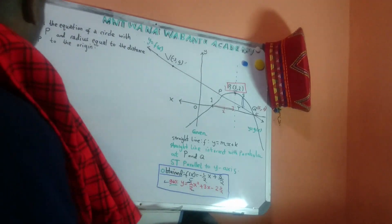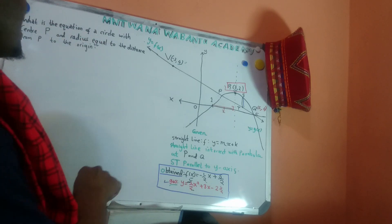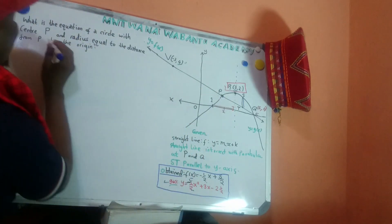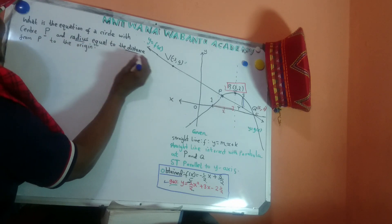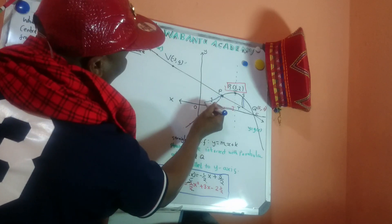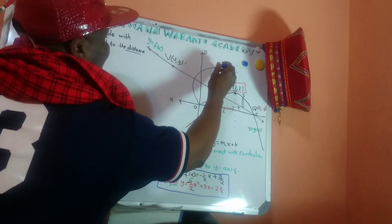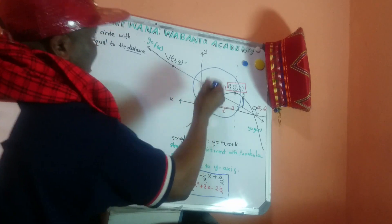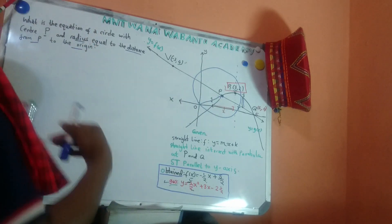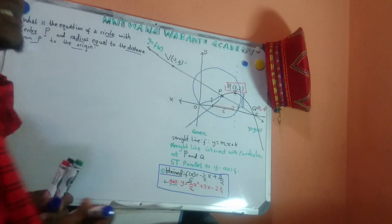Let's go to the next question. What is the equation of a circle with center P? So this circle is going to have a center at P. Let's assume our circle has center P and the radius equal to the distance from P to the origin. So the radius goes from P to the origin. I can draw a rough sketch of a circle. One of the questions is the equation of a circle with center P.